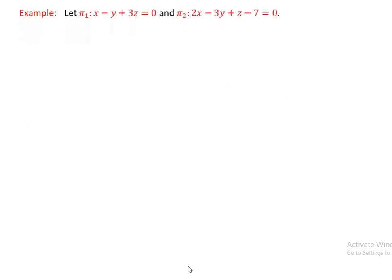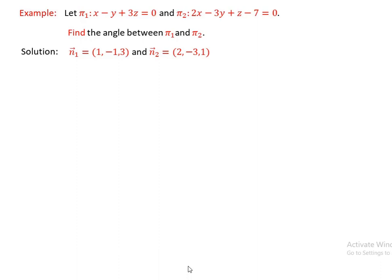Another example: let pi1 be x minus y plus 3z equals 0, and pi2 be 2x minus 3y plus z minus 7 equals 0. Find the angle between pi1 and pi2. To find the angle, we identify the corresponding normal vectors for the given planes, then find the angle between the two normal vectors — that angle is the angle between the planes. n1 = (1, -1, 3) from pi1, and n2 = (2, -3, 1) from pi2.